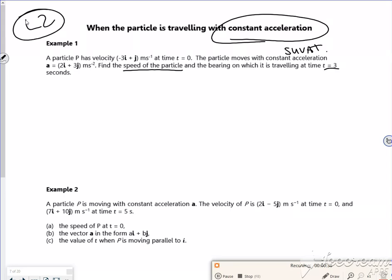So let's set our sum up. Let's have a look how we're doing this. So s not bothered about, u, so at time t = 0 that's implying u, so that's (-3, 1). v is what I want, constant acceleration of (2, 3), and t = 3.